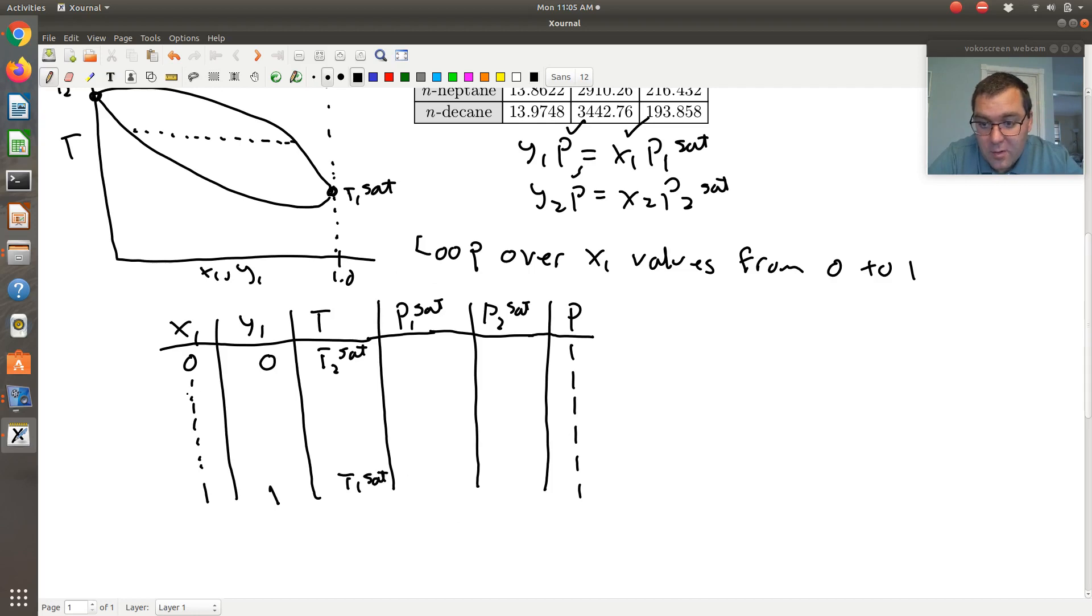So in between, say for X1 is 0.01, then I can just go up to my two equations with two unknowns and solve for Y and T. And once I have T, then you can calculate P1sat and P2sat. So easier said than done.